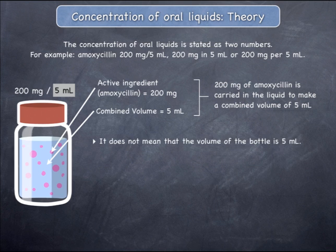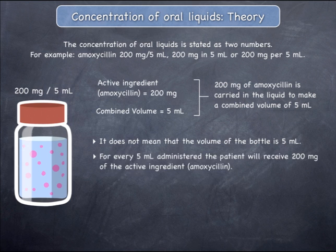It is crucial to understand that this does not mean that the total volume of the bottle is 5 mLs. It simply means that every 5 mLs will contain 200 mg of amoxicillin. In other words, for every 5 mLs administered, the patient will receive exactly 200 mg of amoxicillin.